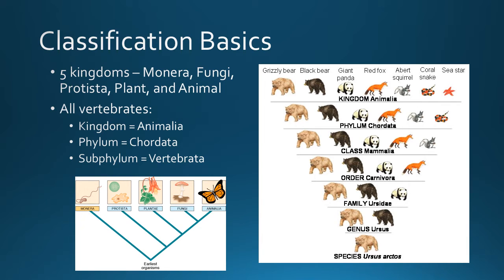Throughout this course, you're going to be learning the classification of a number of different species. You'll need to know the full classification of a bunch of them. That full classification goes from kingdom, phylum, class, order, family, genus, species. The genus and species together form the scientific name. Sometimes you'll have subphyla or subclasses — extra levels in there.